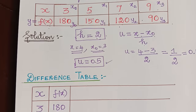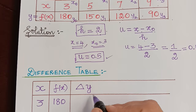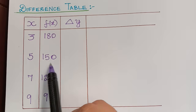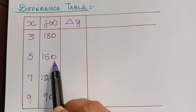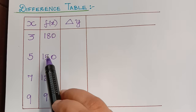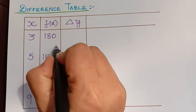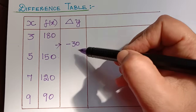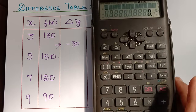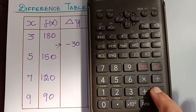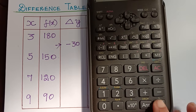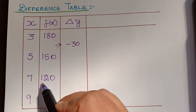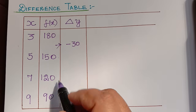Now in the difference table the first step is to find delta y. The first difference is the next value minus the previous value: 150 minus 180 equals negative 30. Similarly, 120 minus 150 equals negative 30. Note: many students mistakenly subtract in the wrong order — you must subtract the previous value from the next value, so 90 minus 120 equals negative 30.